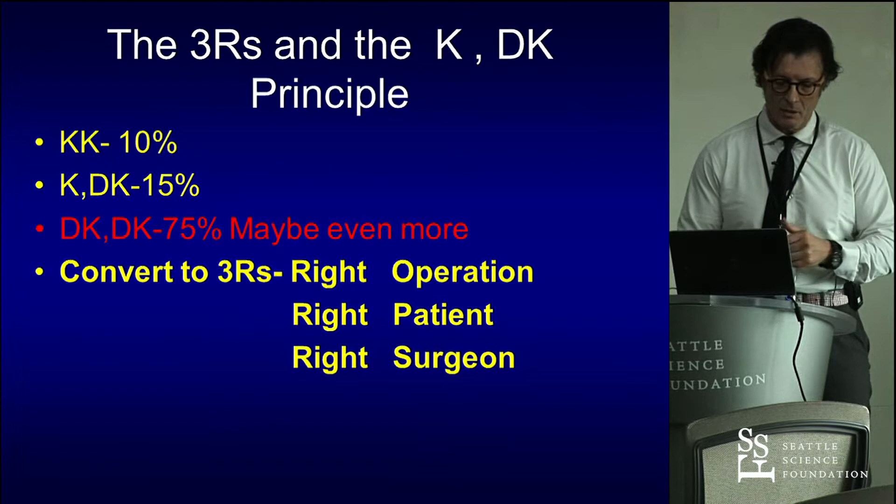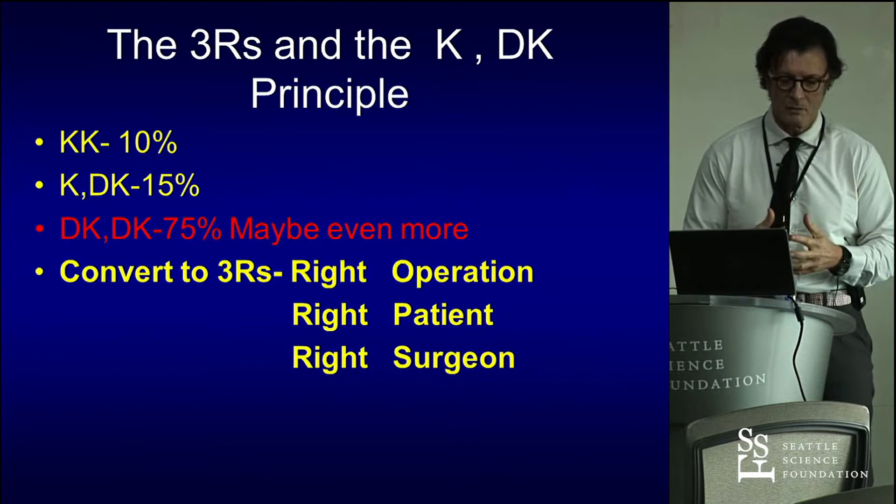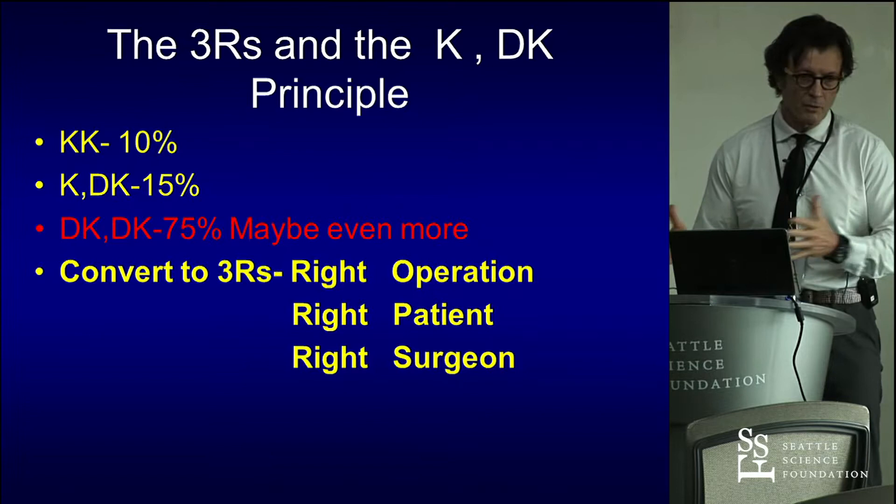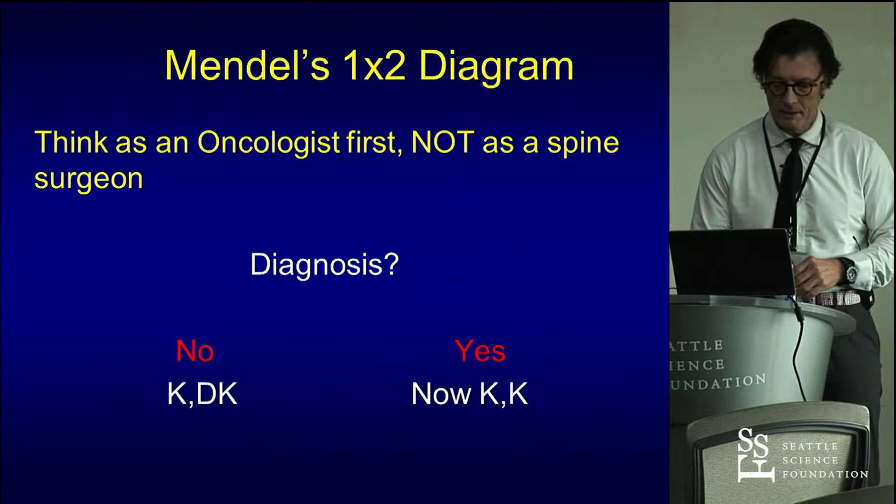The three R's and the 'don't know' principle: we know what we know — about 10%. We know what we don't know — about 15%. We don't know what we don't know — 75%, maybe even more. The goal is to convert from the three W's to the three R's, where we do the right operation on the right patient by the right surgeon.